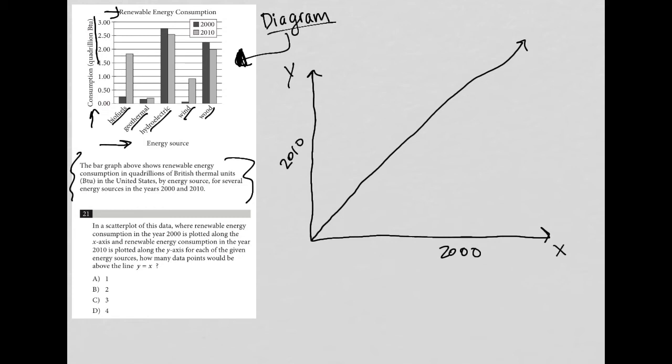So let's see where this is the case. For biofuels, if I were graphing that, my 2000 number looks like it's at 0.25, but my 2010 number is at 1.6. So if I were to graph this and say that this is 0.25, then that would mean that this would be 0.25 again, because we want this line to be y equals x. But 1.6 would be - this is 0.25, this is 0.5, 0.75, 1, 1.25, 1.5 - we'd be way up here. And that point is definitely above the line y equals x. So we have one of these working out for us so far.